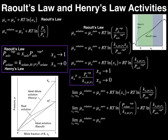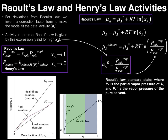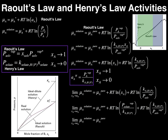Consider the same setup but now let A be water. If the mole fraction of ethanol is 0.25, then water's mole fraction is 0.75, making water the solvent — use the Raoult's law standard state. But if the mole fraction of ethanol is 0.75, then water's mole fraction is only 0.25, making water the solute — use the Henry's law standard state. Be sure to define exactly which species you're dealing with, then analyze the mole fraction to determine which activity is appropriate.